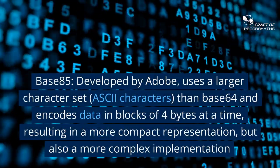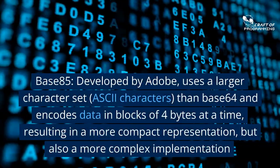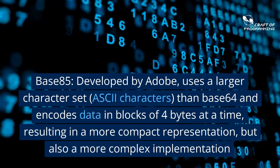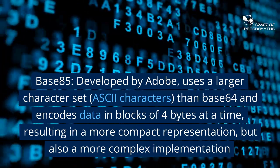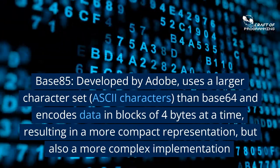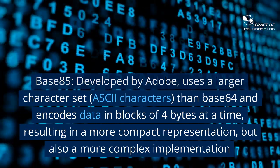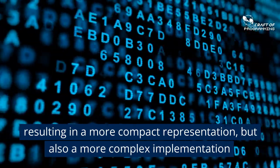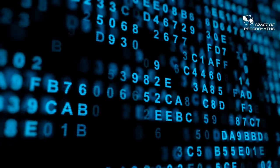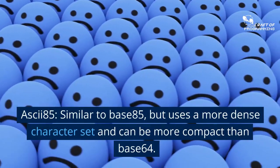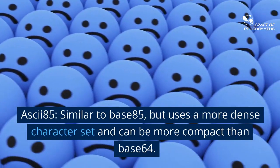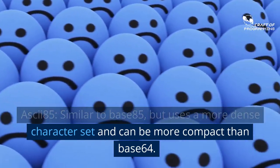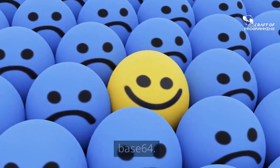Base85, developed by Adobe, uses a larger character set than Base64 and encodes data in blocks of 4 bytes at a time, resulting in a more compact representation but also a more complex implementation. ASCII-85 is similar to Base85 but uses a more dense character set and can be more compact than Base64.